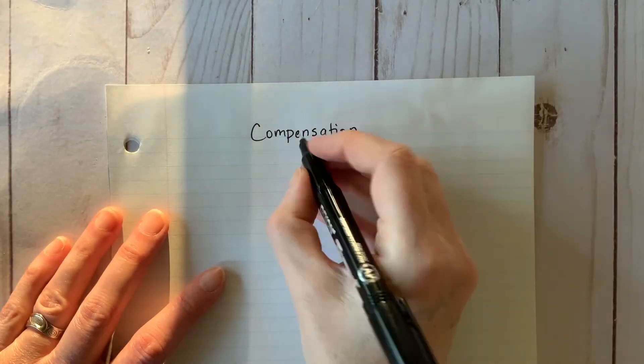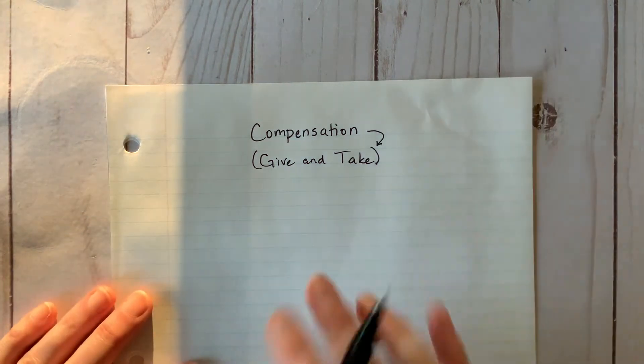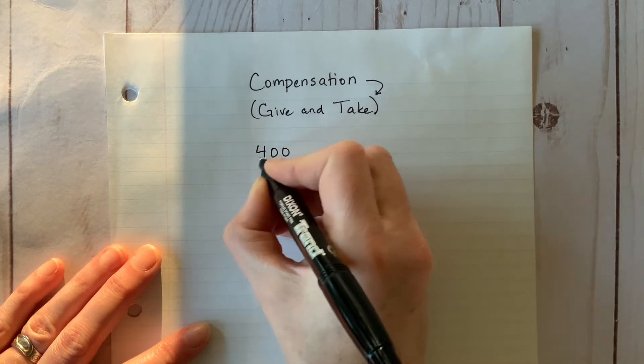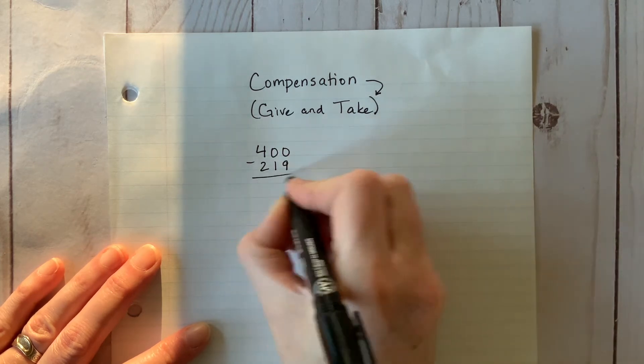Finally, let's take a look at the compensation or give and take model. This pairs well with the standard algorithm. There is no number expanding and you should subtract starting from the right side of the equation to the left.